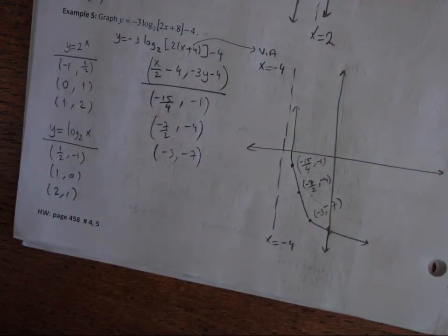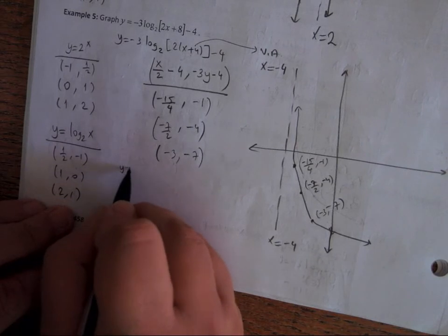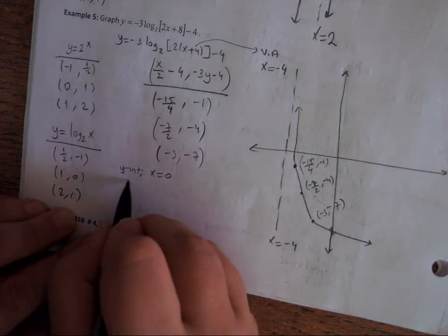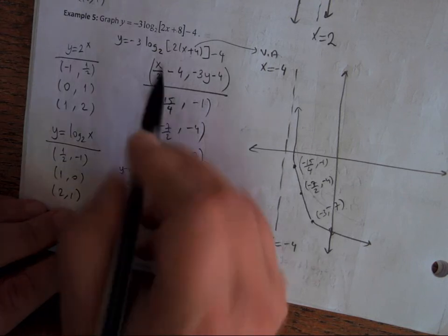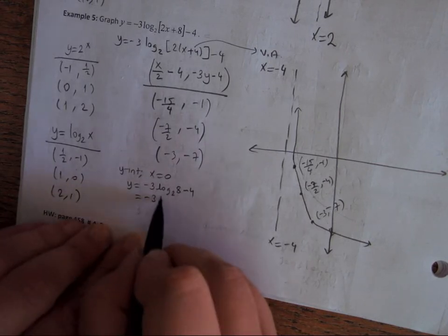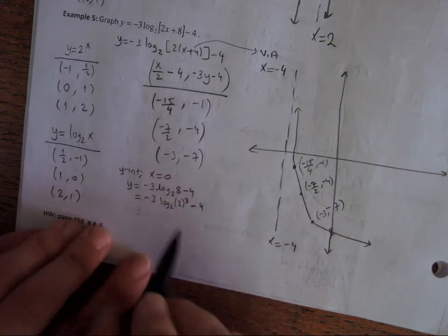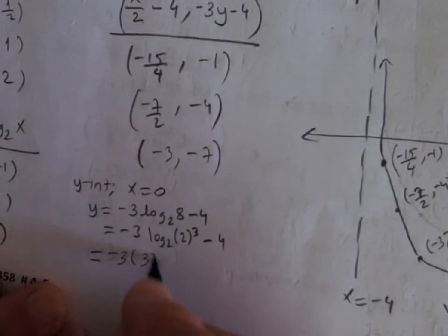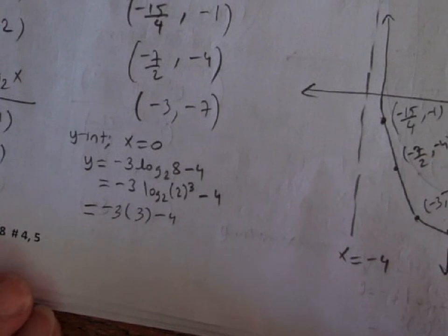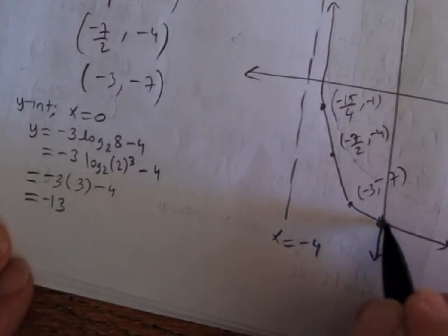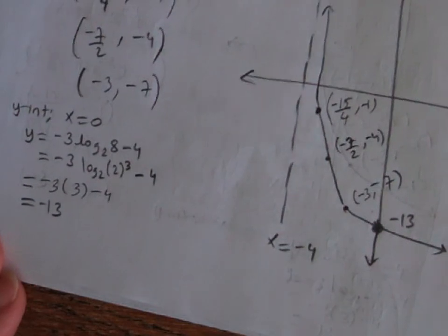We can also find x and y intercepts. For the y-intercept, substitute x = 0: y = -3·log₂(8) - 4 = -3·log₂(2³) - 4 = -3(3) - 4 = -13. So the y-intercept is -13, which is consistent with the graph.